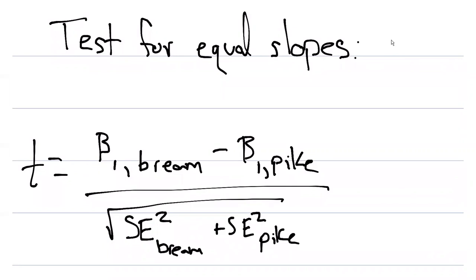We need to know the slope for the bream species and the slope for the pike species. To do this we need to run the regressions first, so I urge you to take a look at the R code to see the regression output for the separate simple linear regressions for the bream species and for the pike species.